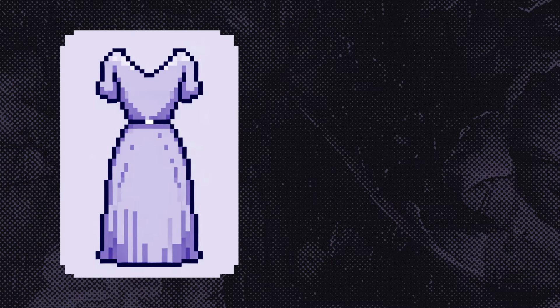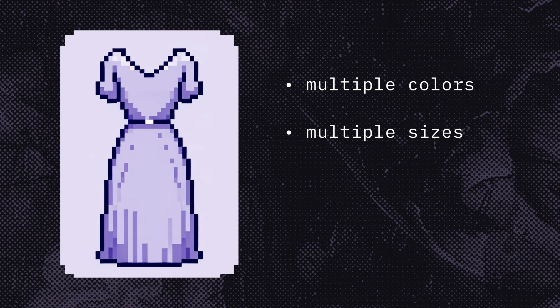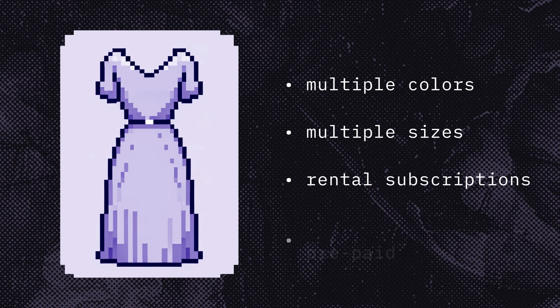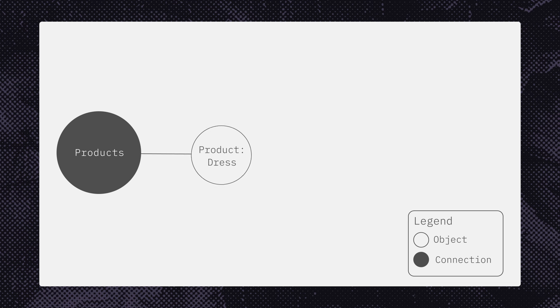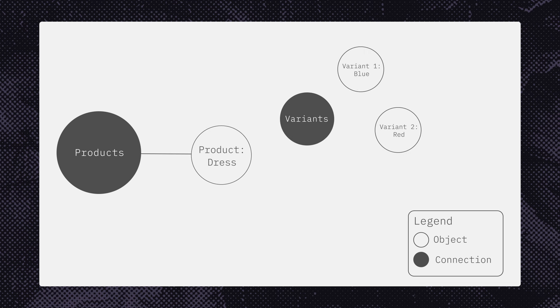An online clothing retailer sells multiple colors and sizes of the same dress. They also offer both rental subscriptions and prepaid options for products being released in seasonal collections. Let's start with the dress, which is a product — there are multiple variants of the dress available.